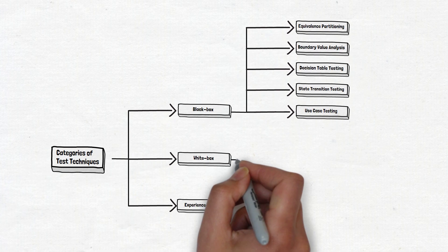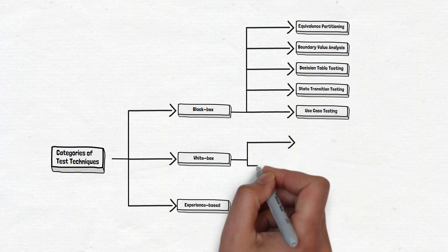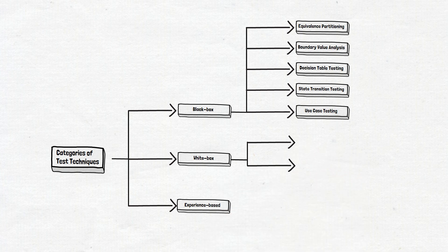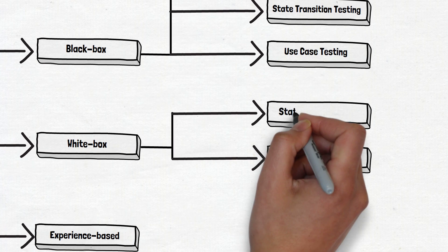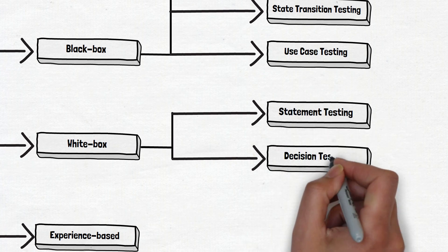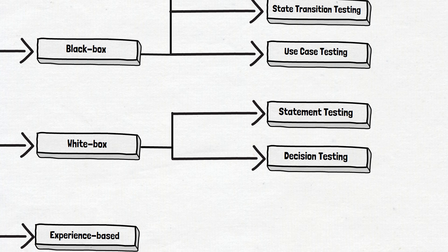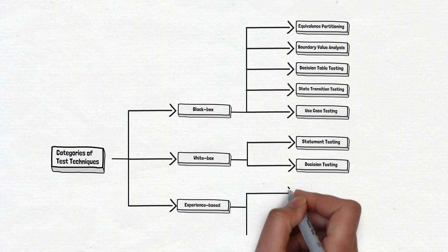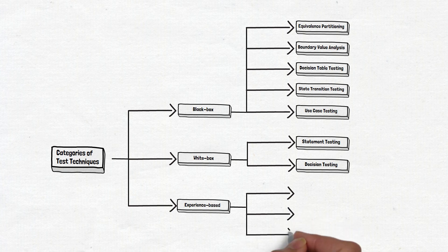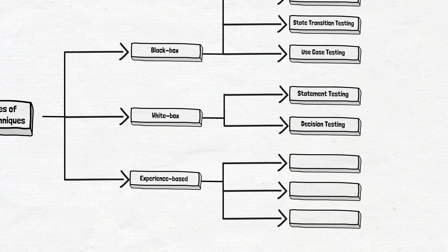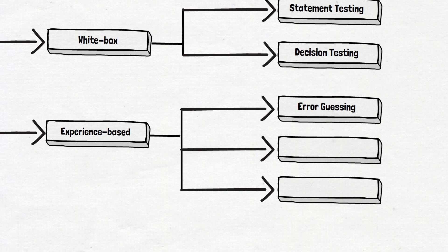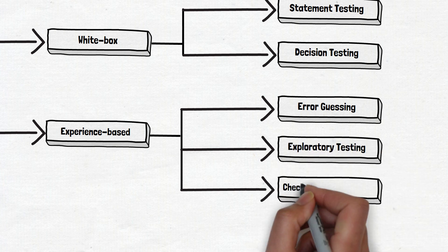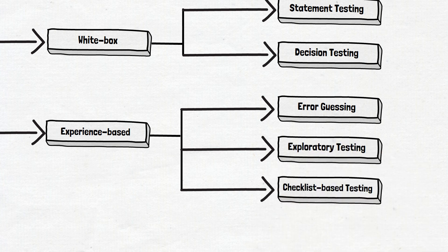The next category is white box test techniques. ISTQB highlights only two: statement testing and decision testing. The last category is experience-based techniques, and there are three of those in the ISTQB syllabus: error guessing, exploratory testing, and checklist-based testing.